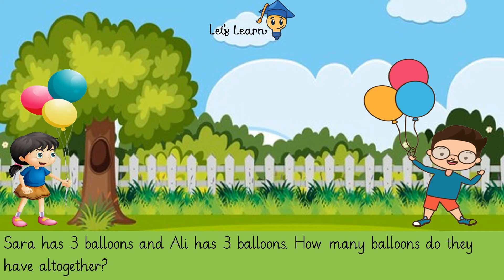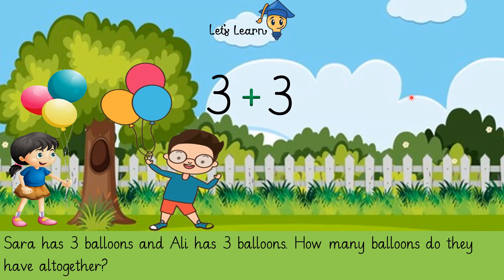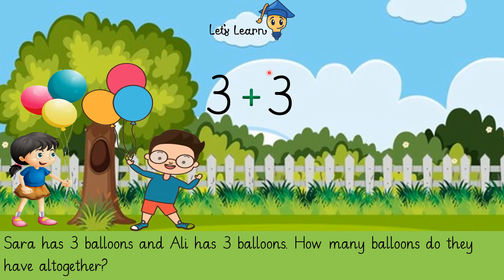Check out the next sum. Sara has three balloons — let's count: one, two, three. And Ali also has three balloons: one, two, three. Sara and Ali both have three balloons. How many balloons do they have altogether? We are going to use the plus sign — so three balloons of Sara.